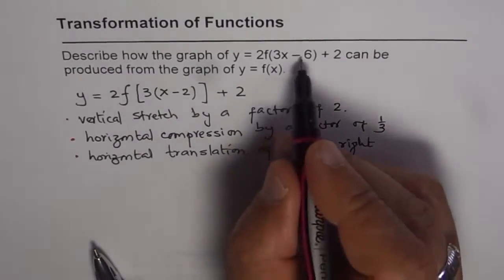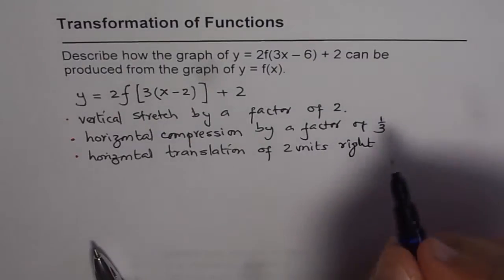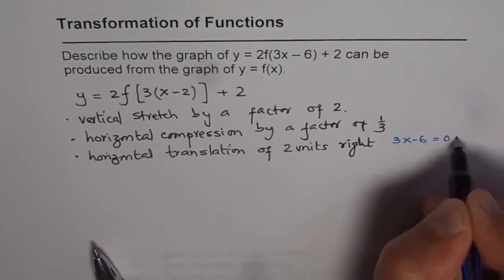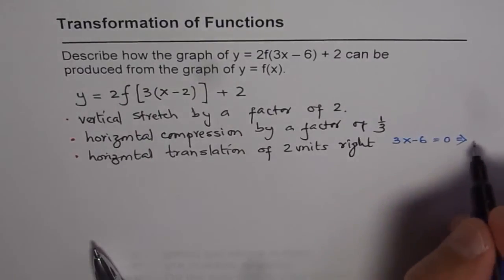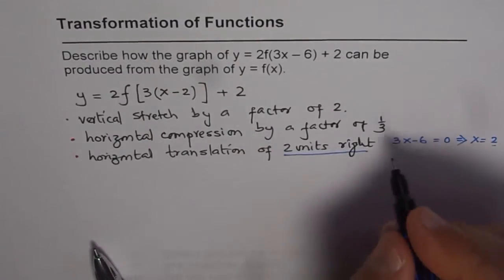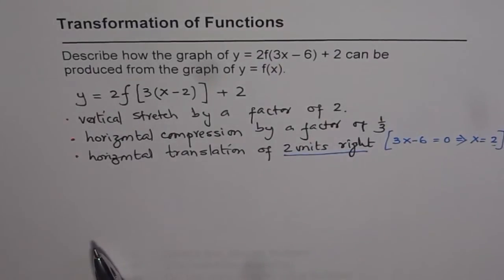You could do that with 3x minus 6 also. Let me just show you here. If you equate 3x minus 6 equals to 0, what do you get? You get x equals plus 2. So that is 2 units to the right. I hope you understand how to get it from any general equation.